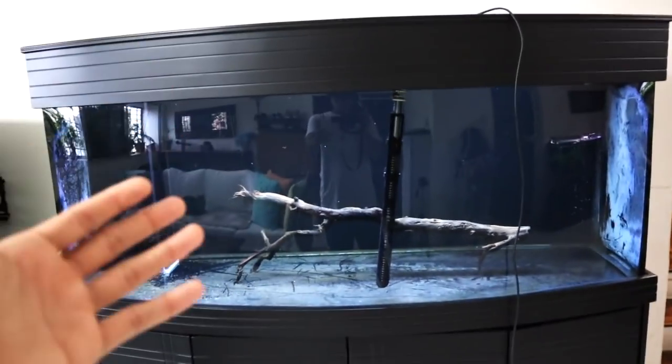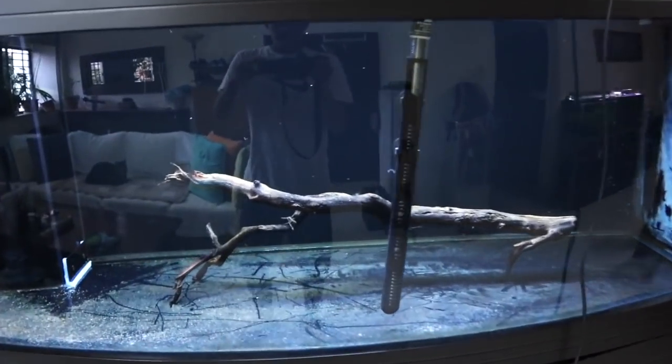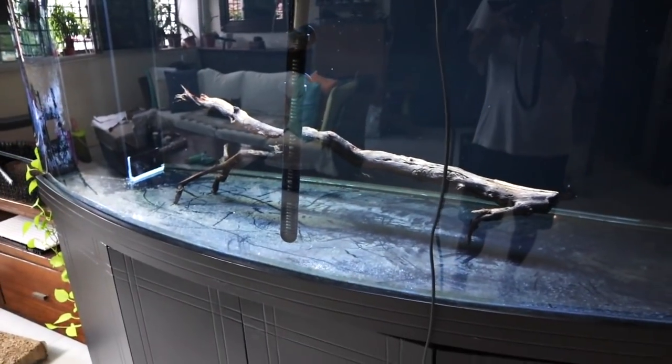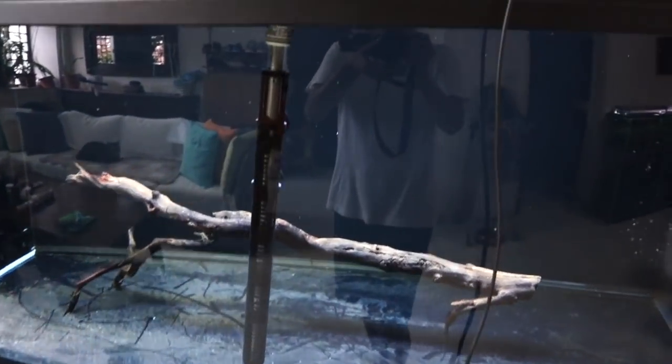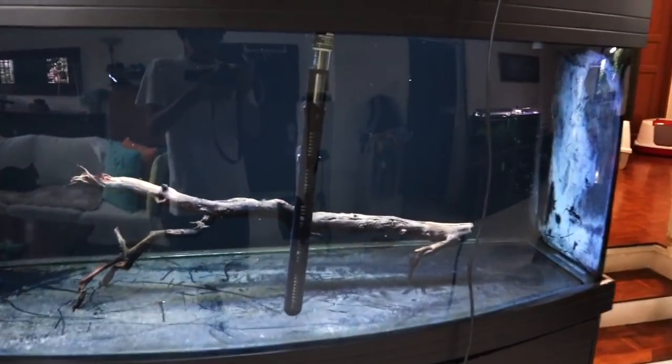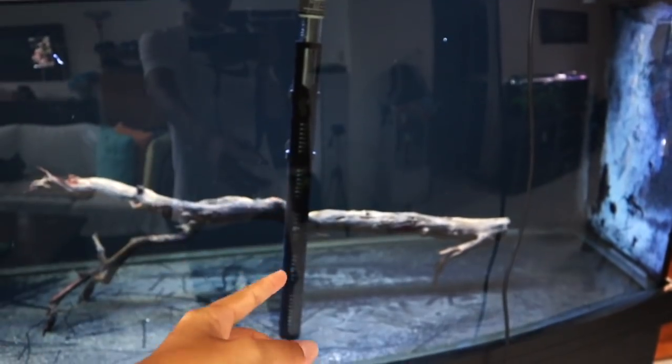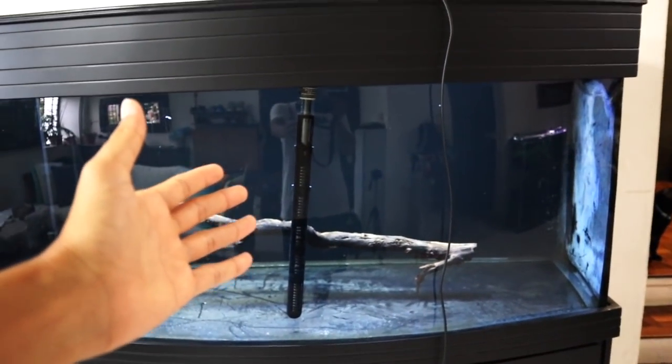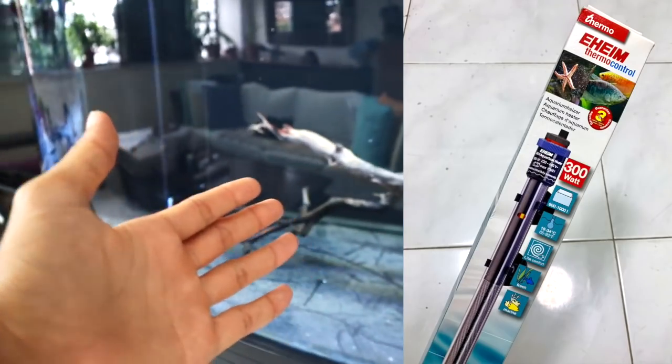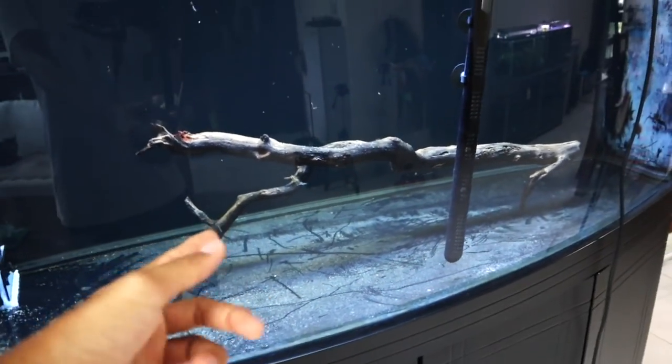Right now it's a little bit messy. I've been cycling this tank so we'll be able to put fish in soon, but we need to do a few things today. Right here you can see there's a heater, I think this is a 300-watt heater. I'll show you the box later and I've got a driftwood in here.